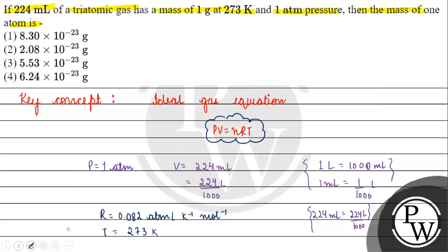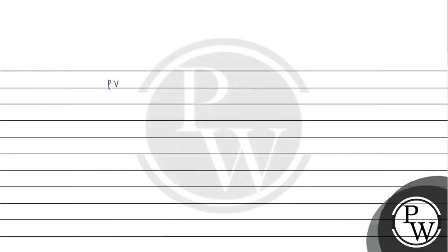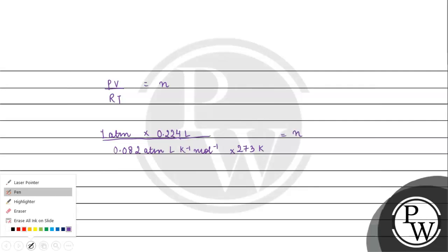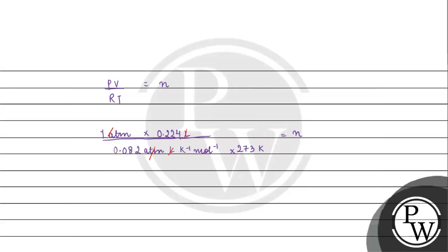Now, to find the number of moles, we use n = PV/RT. Substituting the values: n = (1 atm × 224/1000 liters) / (0.082 liter·atm per kelvin per mol × 273 kelvin). The units cancel — atm with atm, liter with liter, kelvin with kelvin — giving us n = 0.01 moles.